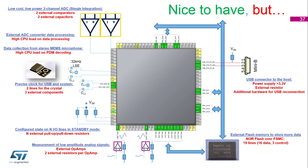The currents measured on the shunt resistors present an additional challenge — they are small and need to be amplified by external op-amps and brought in by internal ADCs. Finally, the data collected from all sensors needs to be stored in a big memory, so why not connect external NOR flash via external memory interface?